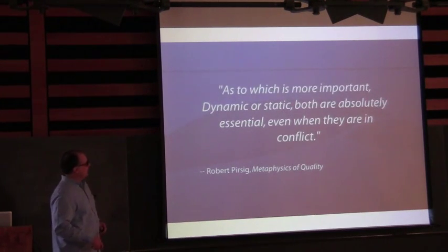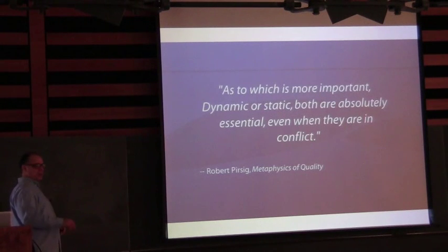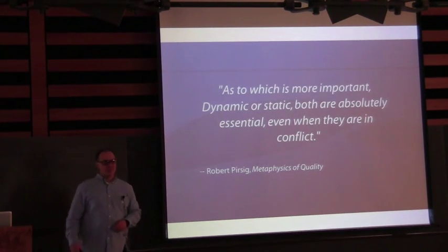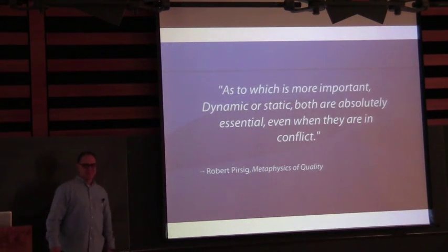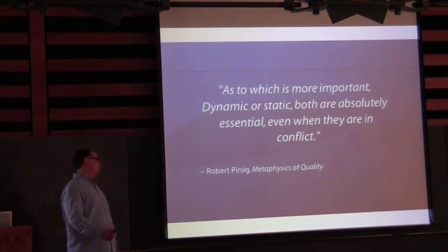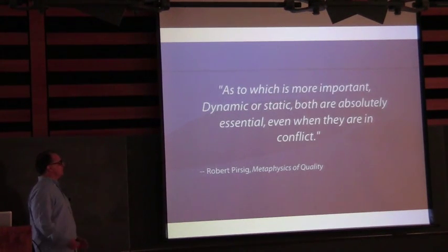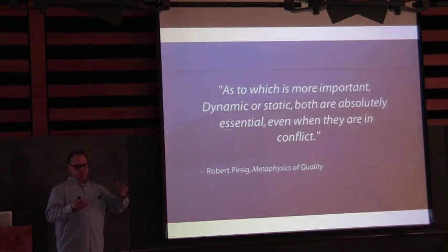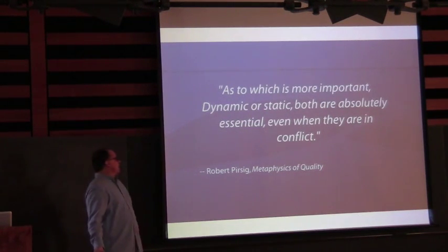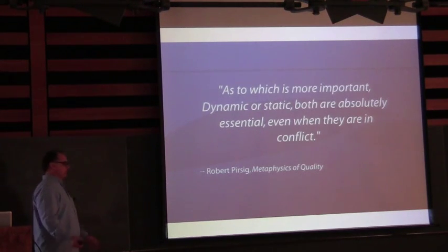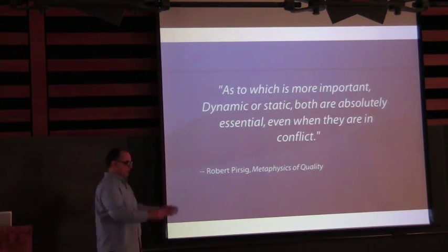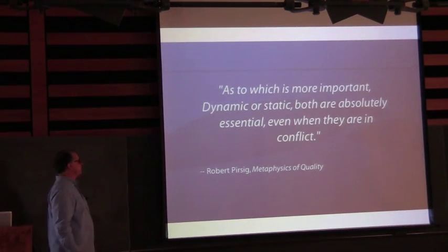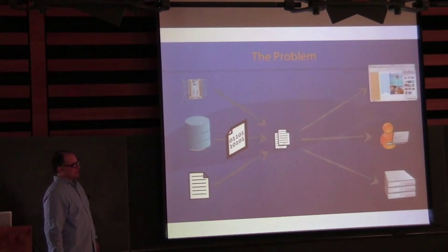Here's another quote I remember from Robert Pirsig. How many people have read Zen and the Art of Motorcycle Maintenance? It's a good book — it's about quality, really. About what quality is and how you make things in a quality way. He's talking about dynamic and static: in his world, dynamic is something unknown where you're still finding your way, and static is already established and well known. The quote fit in this context so I used it.